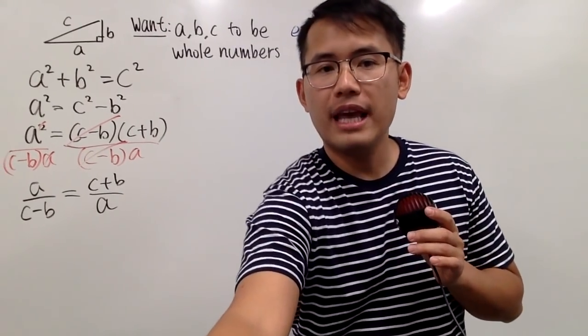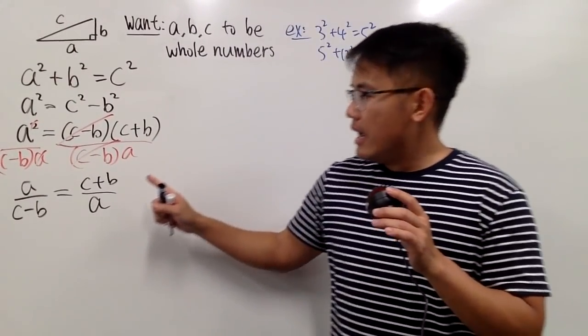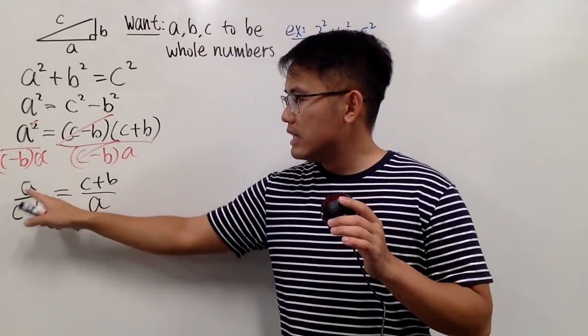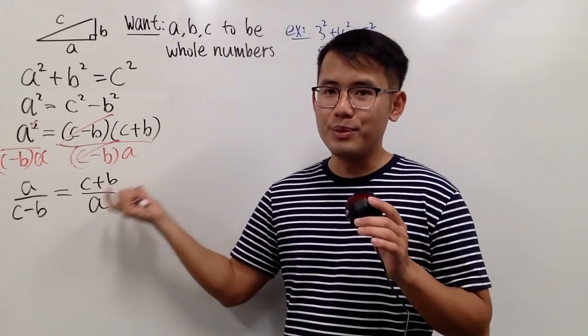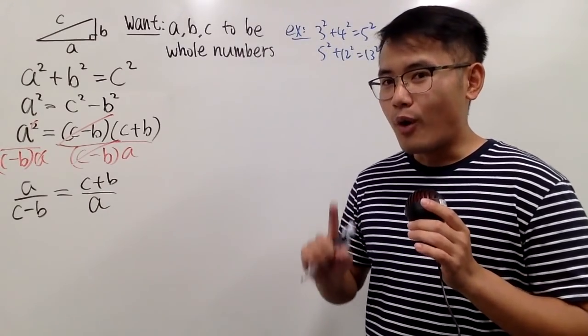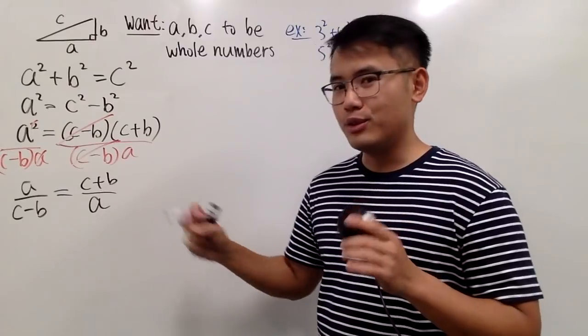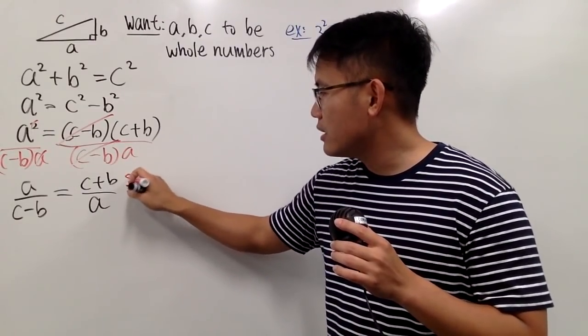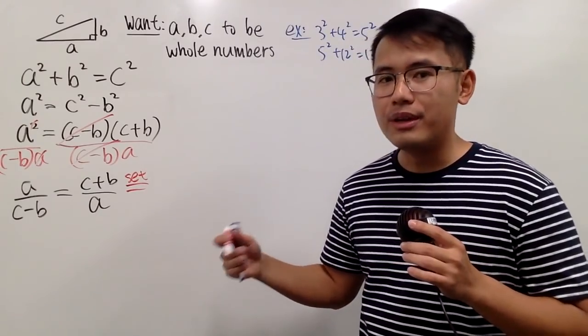This right here, remember, A, B, and C, they are all whole numbers. So when you have a whole number divided by a whole number, this is going to be a rational number, right? Therefore, why don't we just make this to be a rational number? However, I am going to set this to be a rational number in the following form.